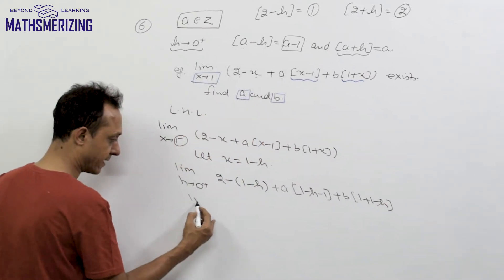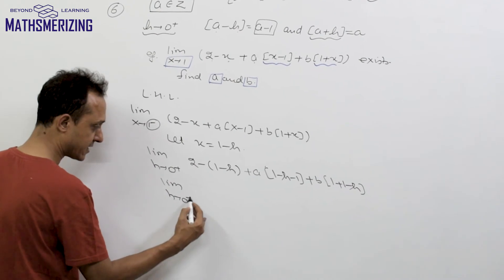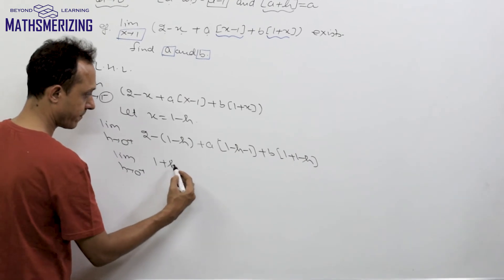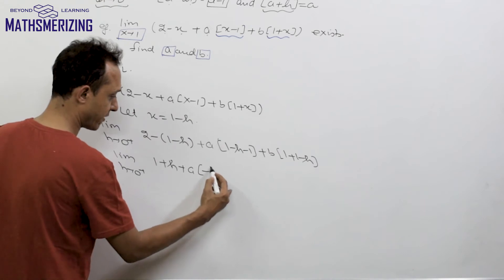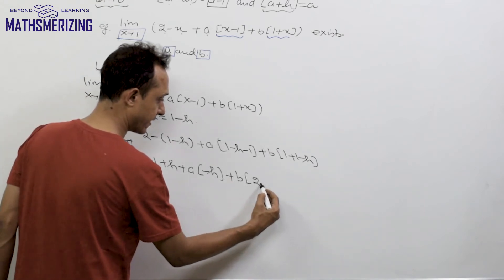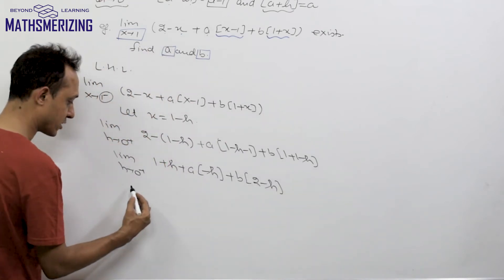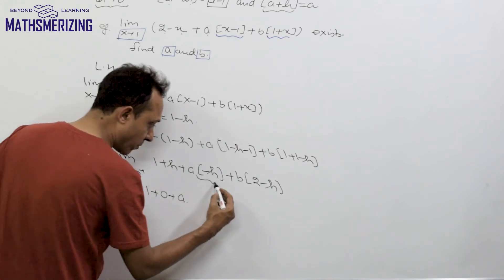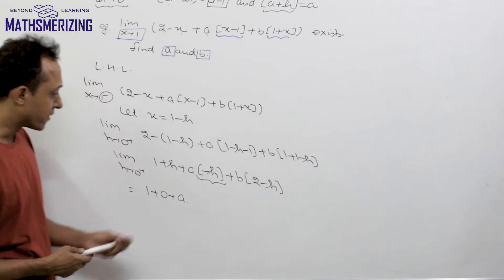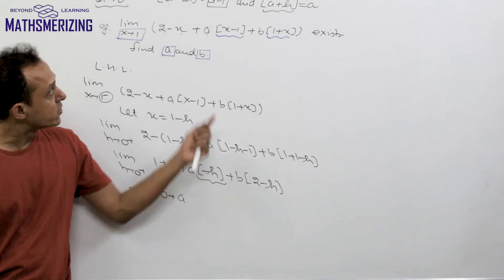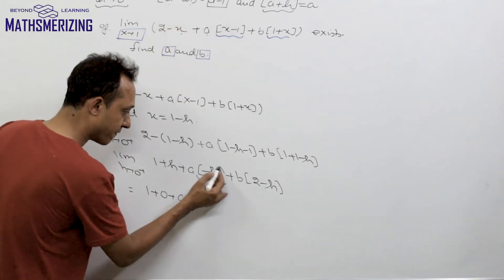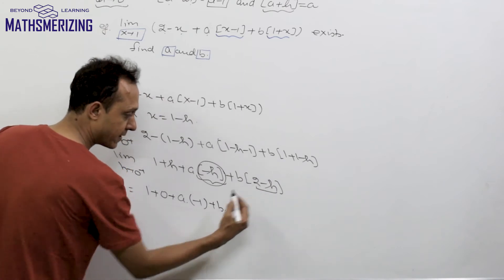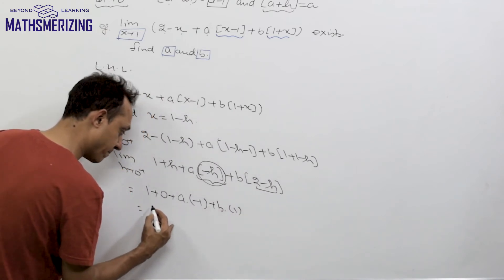Evaluating the limit as h → 0⁺: (1 + h) → 1. Now GIF(-h): since -h = 0 - h, using the property GIF(a - h) = a - 1, we get GIF(-h) = -1. And GIF(2 - h) = 2 - 1 = 1. So the left-hand limit = 1 + a·(-1) + b·(1) = 1 - a + b.